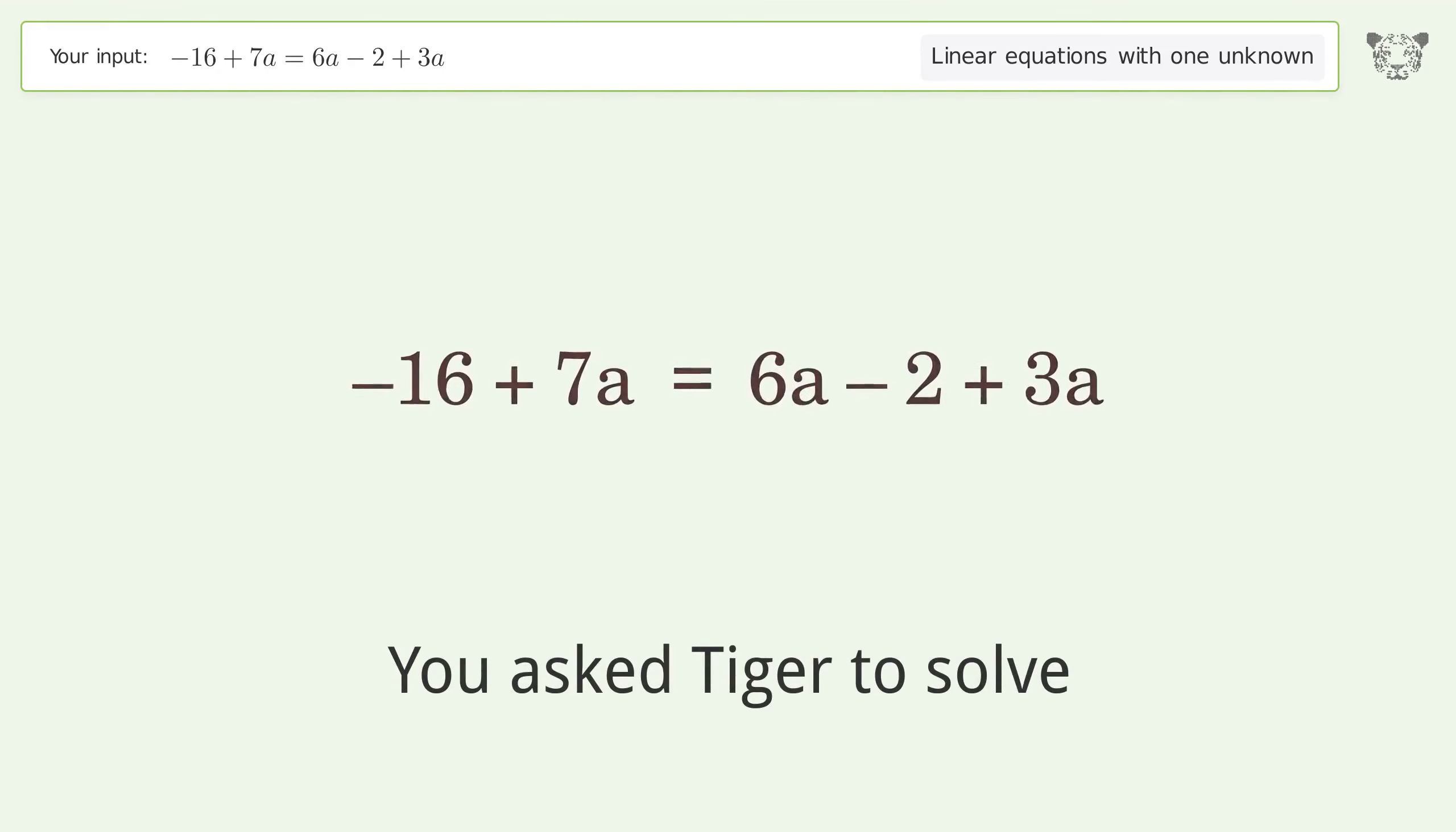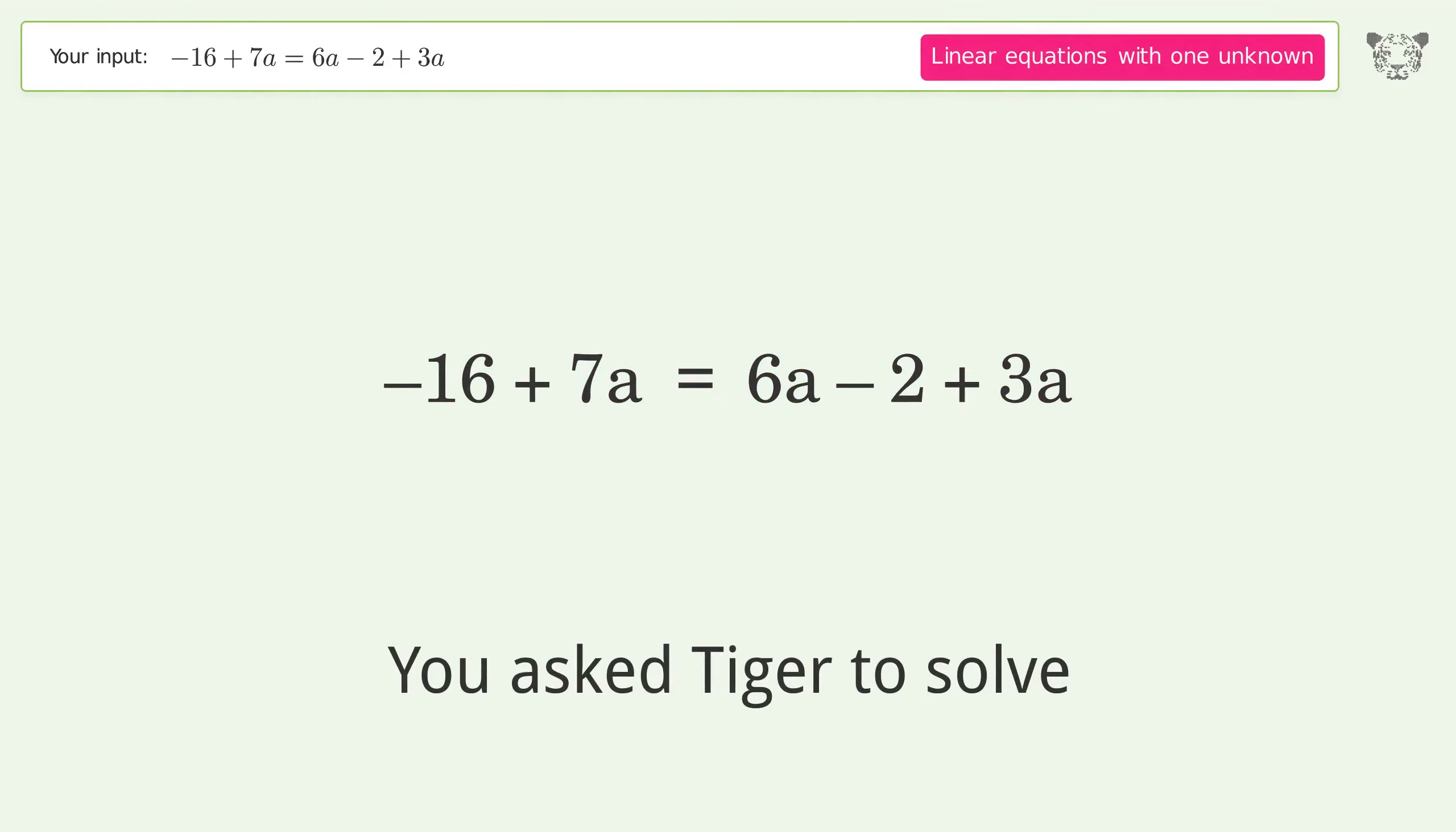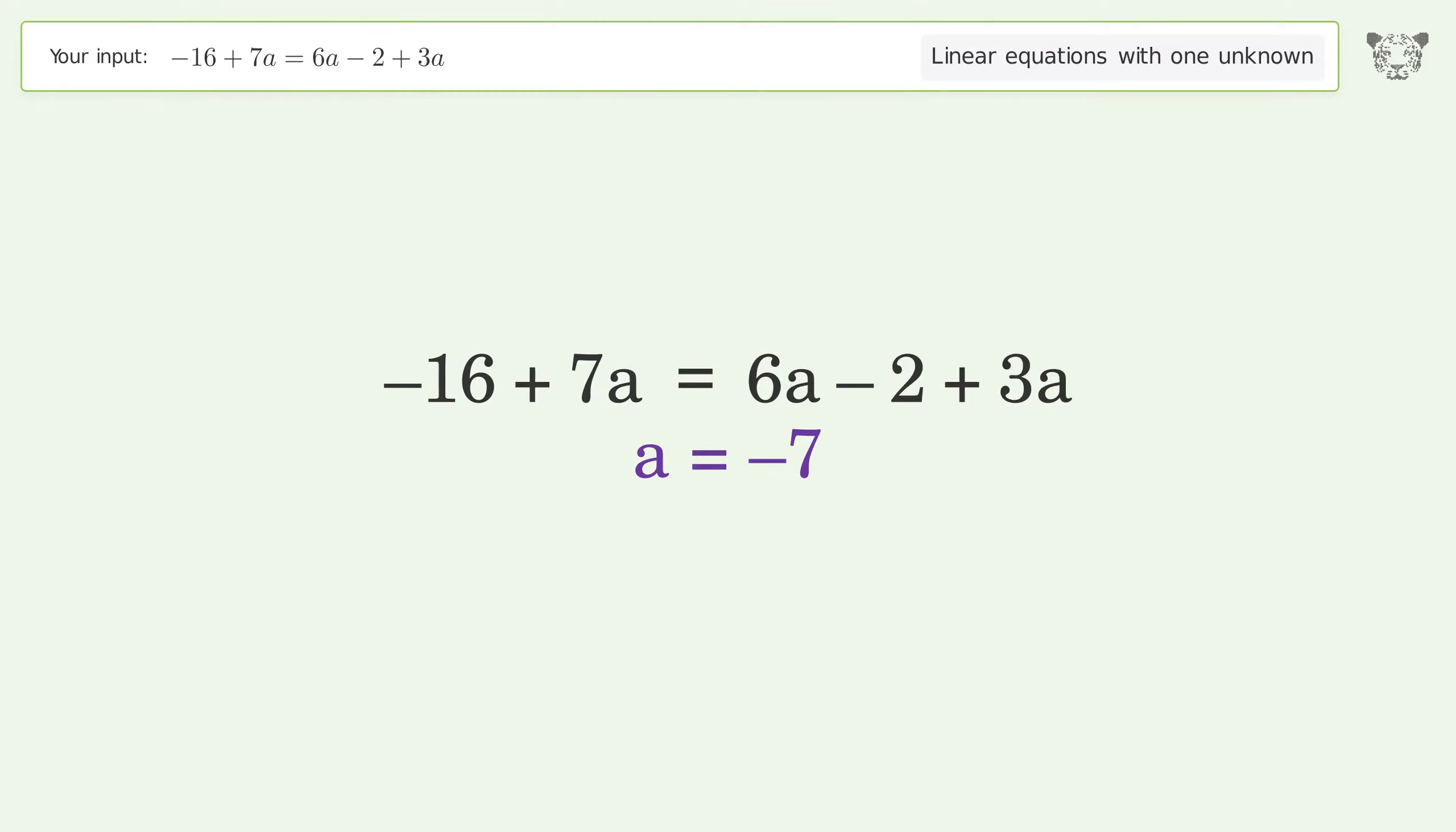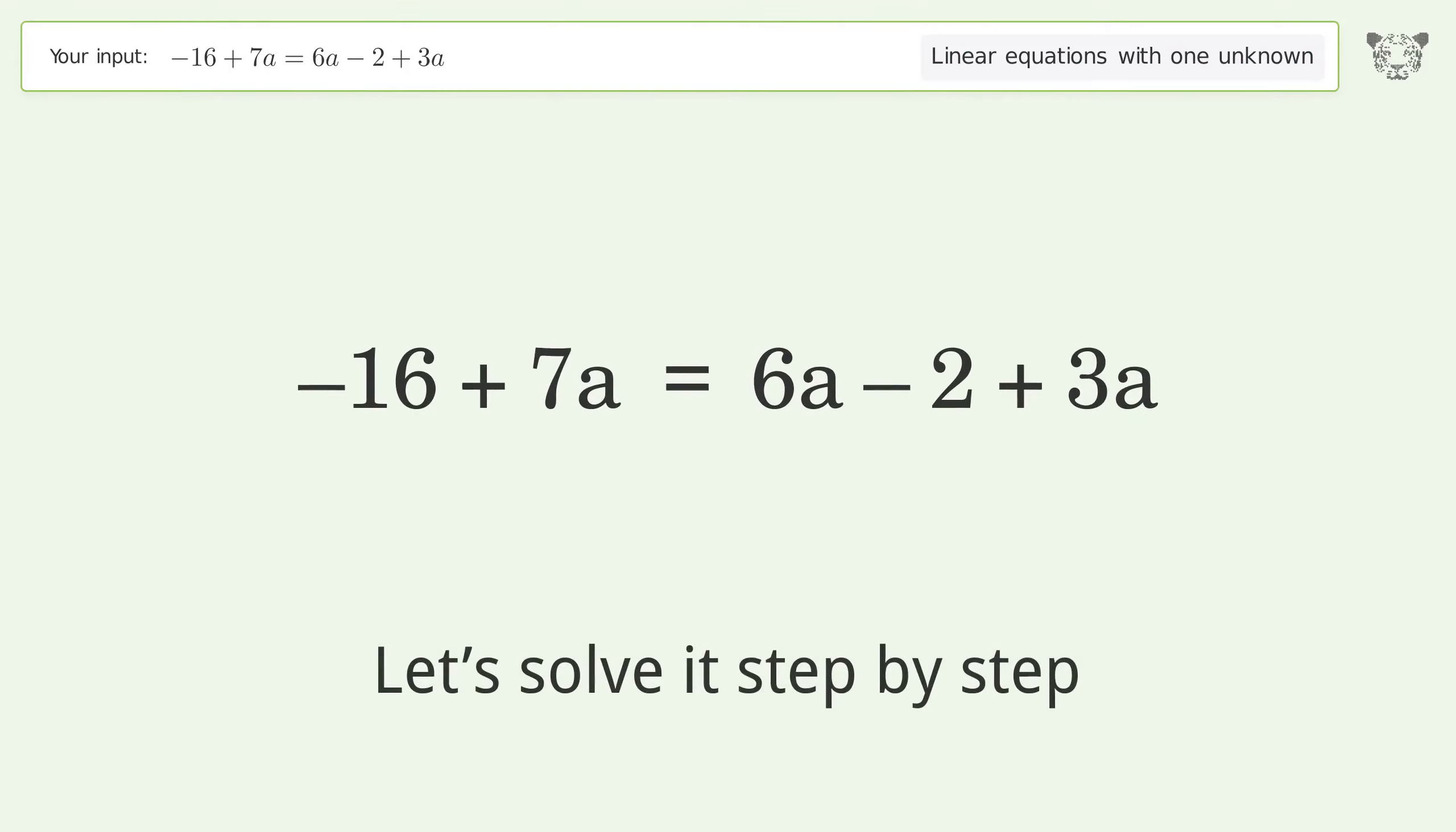You asked Tiger to solve. This deals with linear equations with one unknown. The final result is a equals negative 7. Let's solve it step by step.